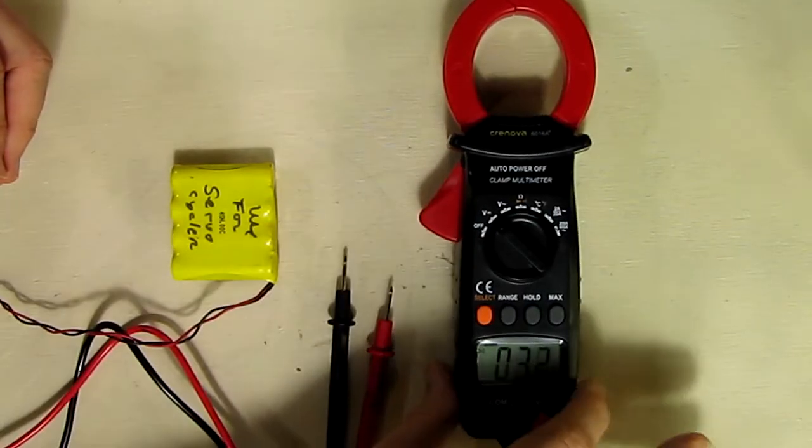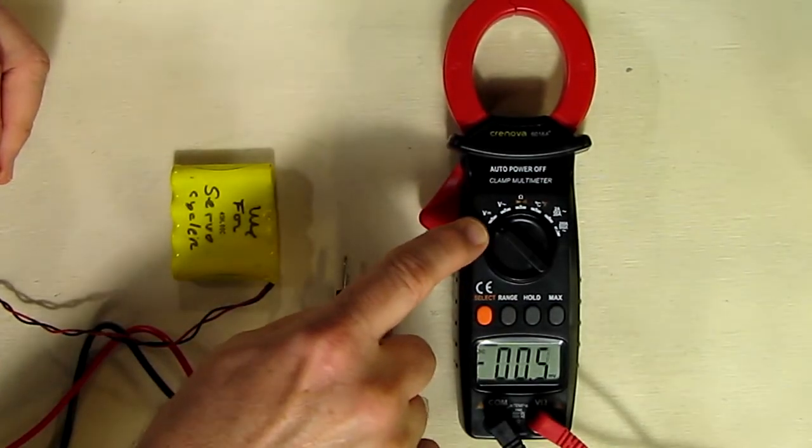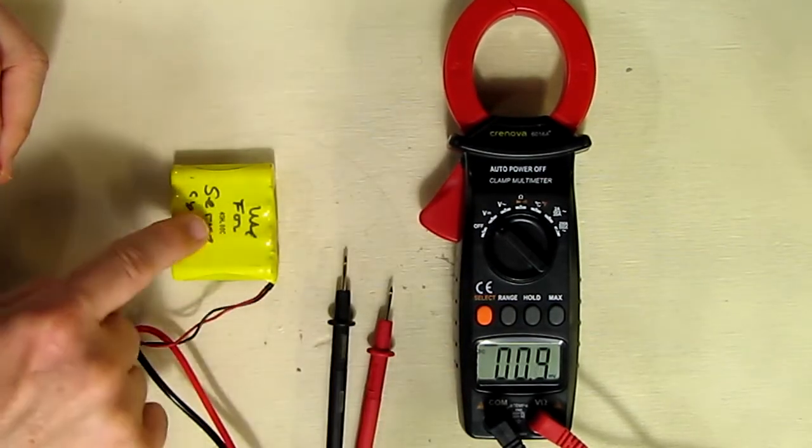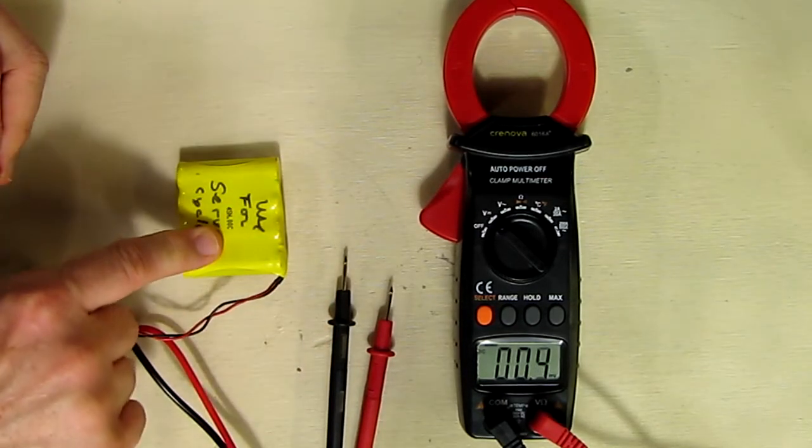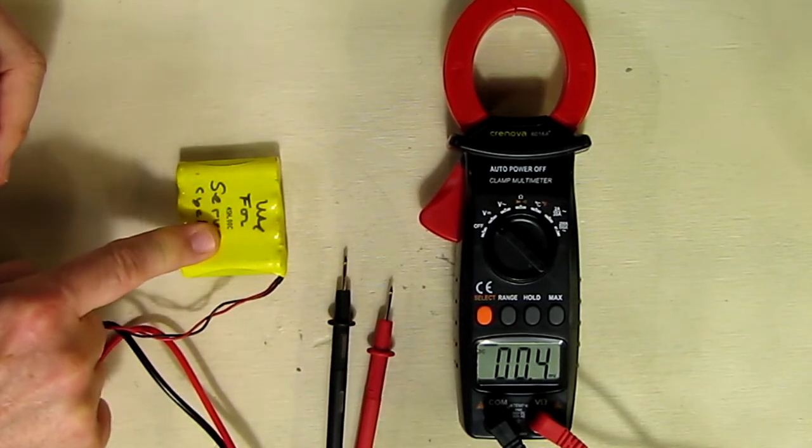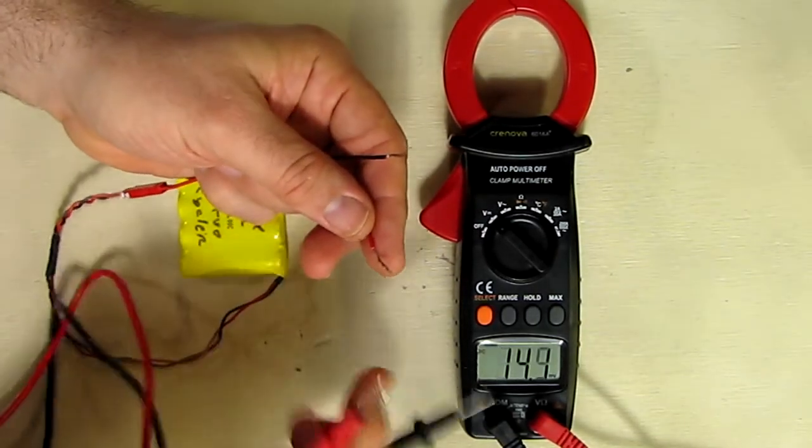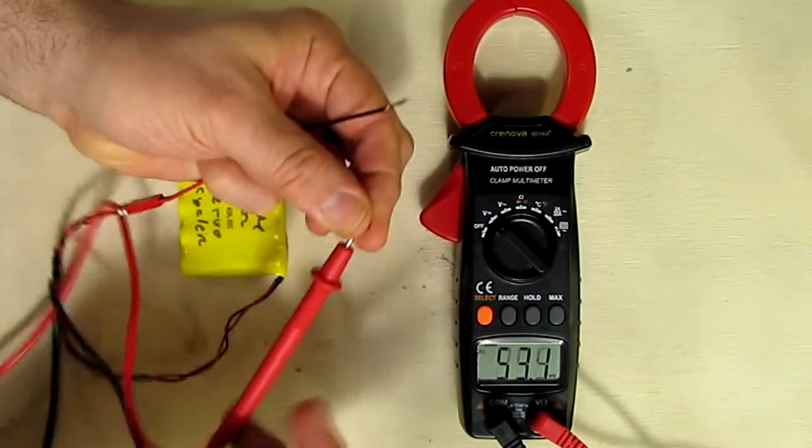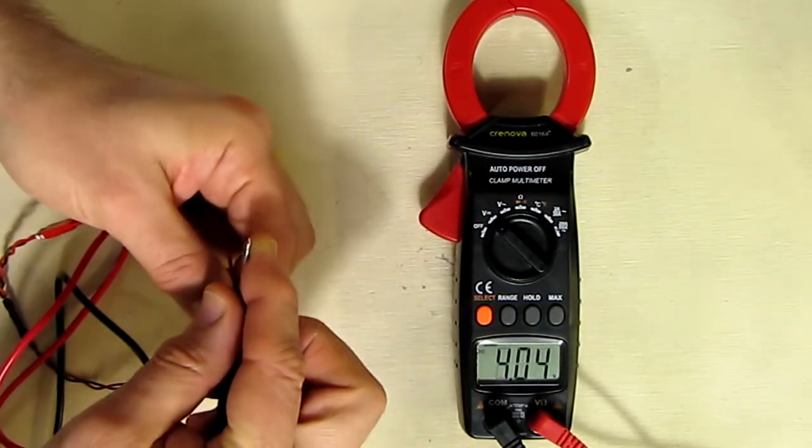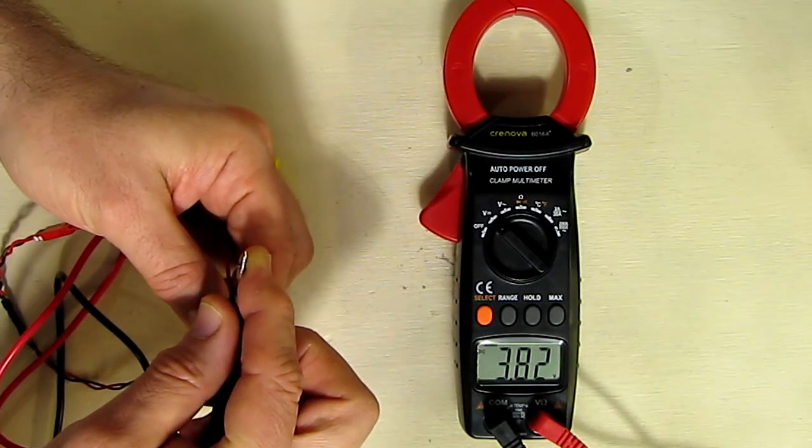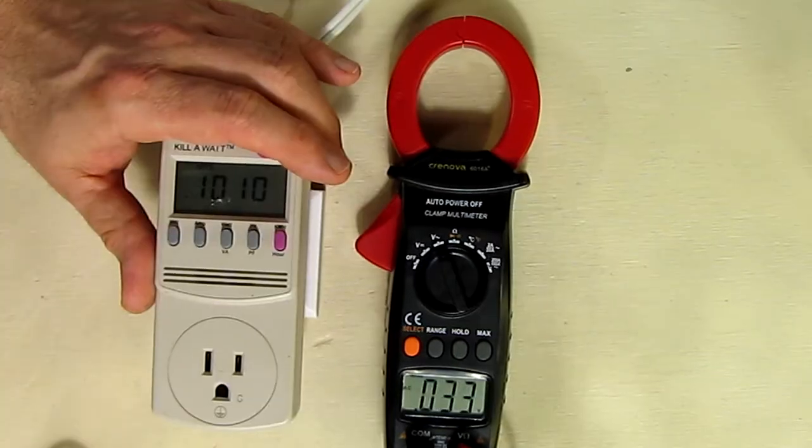So let's test out the DC voltage function. I have it on DC voltage right there and I have a 3.4 volt battery right here. I'm going to put the positive on the red and the negative on the black, and you see it says 3.82 volts, which is correct.